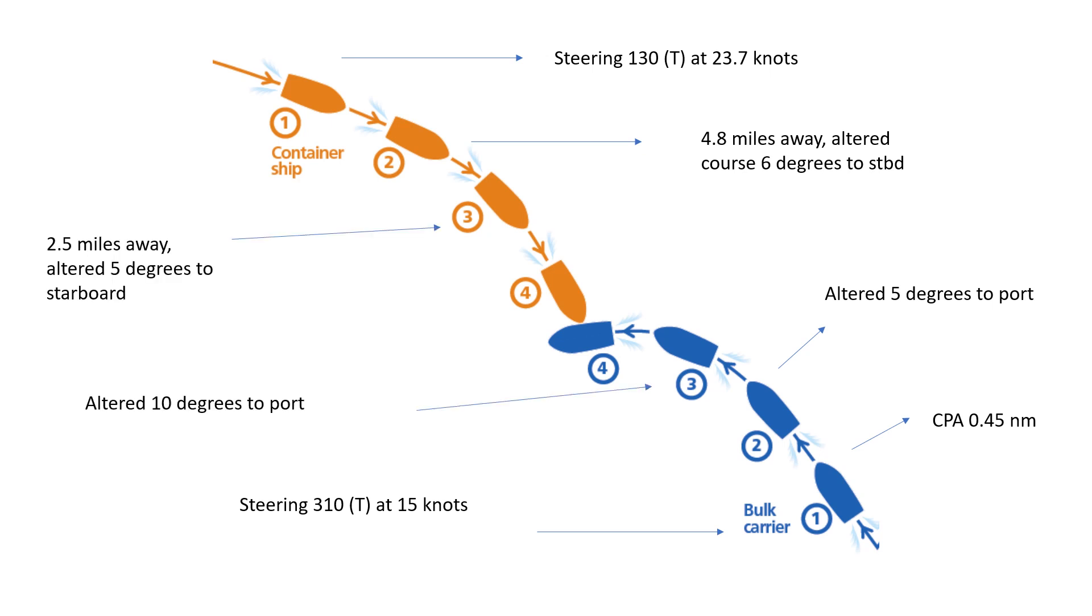At position number three, when the two vessels were 2.5 miles away from one another, the container ship altered five degrees to starboard and the bulk carrier altered about 10 degrees to port.